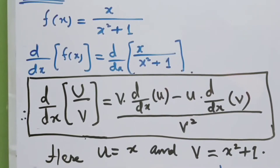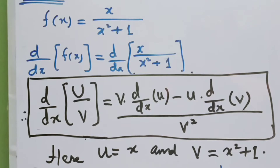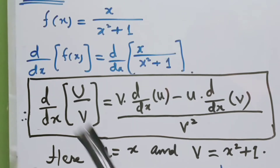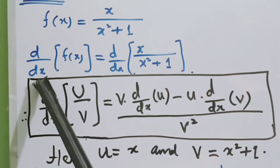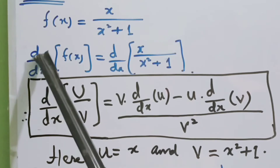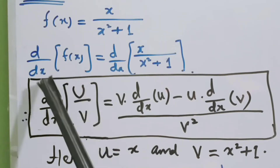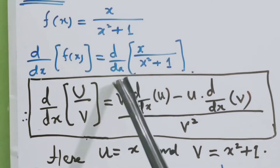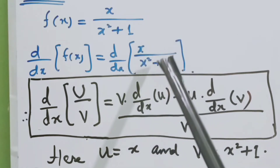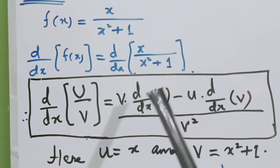For finding the derivative of f(x) = x/(x² + 1), which is a rational function in fraction form, we will apply the differential operator — the derivative of f(x) with respect to x, that is the derivative of x over (x² + 1).